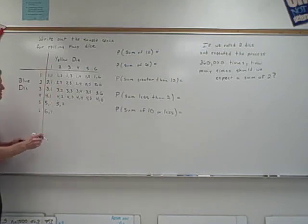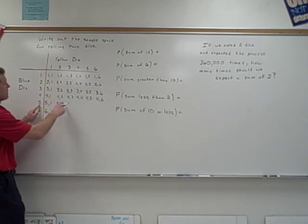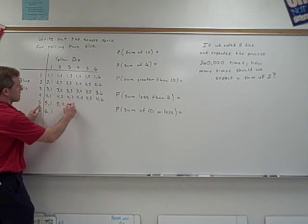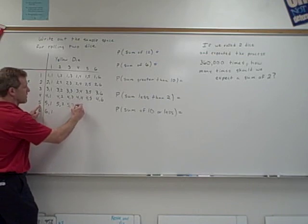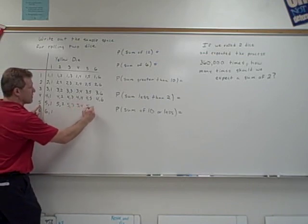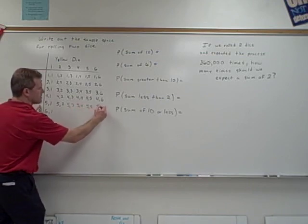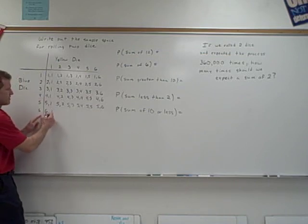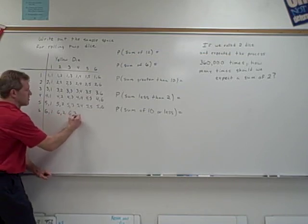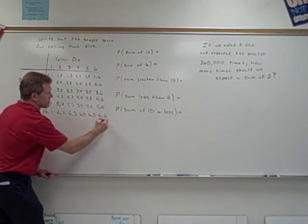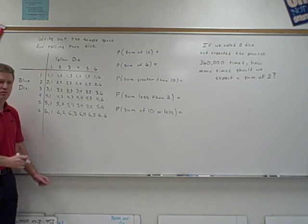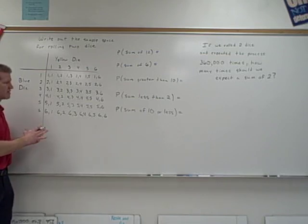So to complete the rest of this, a five on the blue and a three on the yellow would be written like this: five, three. A five on the blue and a four on the yellow would be five, four. And then five, five. Five, six. A six on the blue, one on the yellow. Six and a two, six and a three, six and a four, six and a five, six and a six. So that's called writing out the sample space for two dice, for rolling two dice.